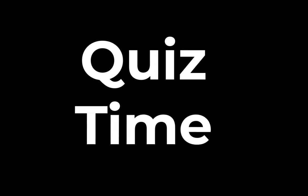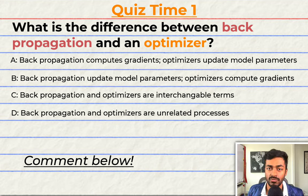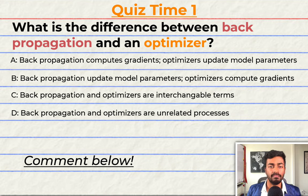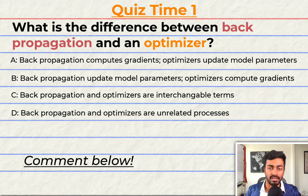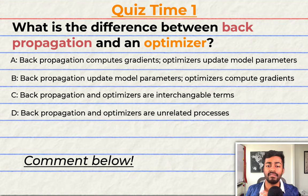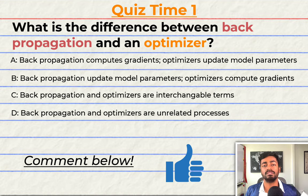Quiz time! What is the difference between back-propagation and an optimizer? A: Back-propagation computes gradients while optimizers compute updated model parameters. B: Back-propagation computes updated model parameters and the optimizer computes gradients. C: Back-propagation and optimizers are interchangeable terms describing the same process. Or D: Back-propagation and optimizers are unrelated processes in neural network training. Comment your answer down below and let's have a discussion. If you think I deserve it, please give this video a like — it will help me out a lot. That'll do it for quiz one and pass one of the explanation.